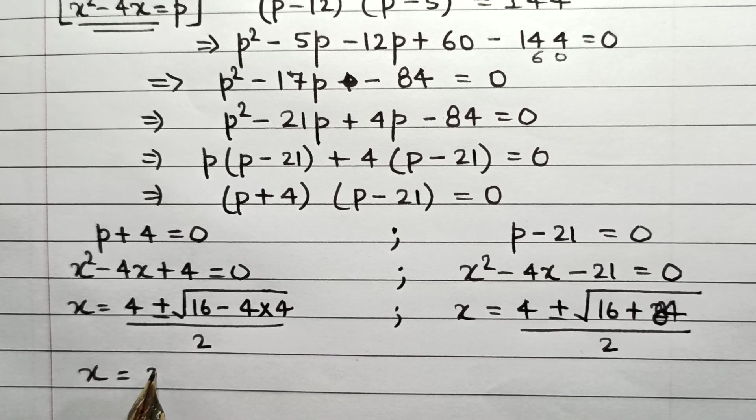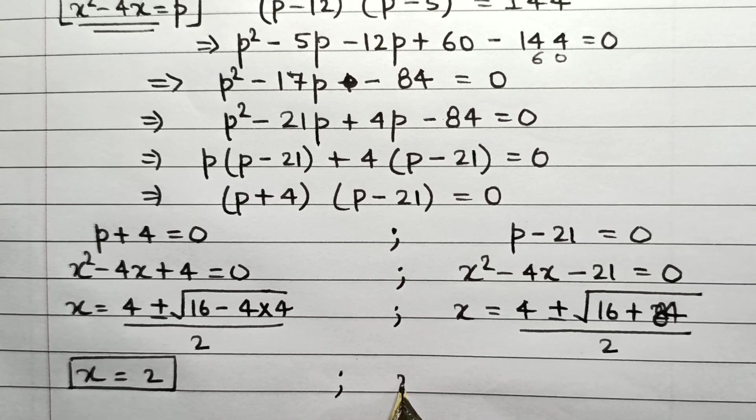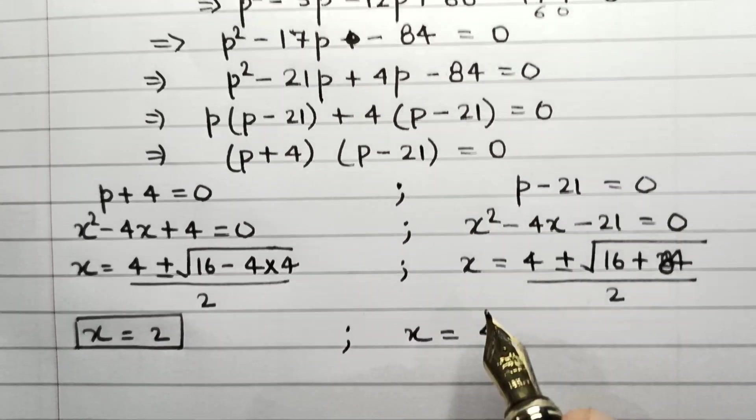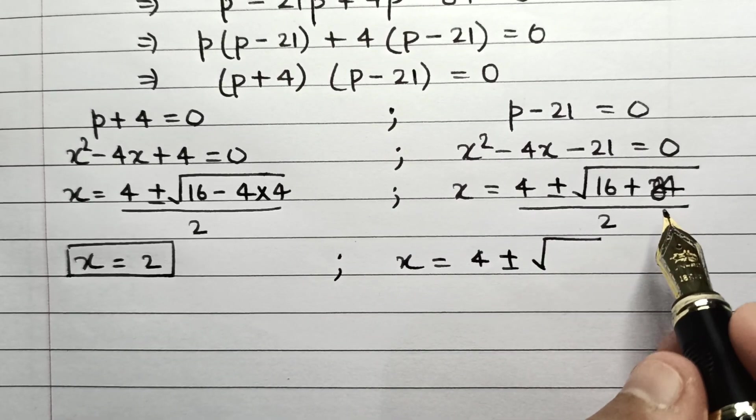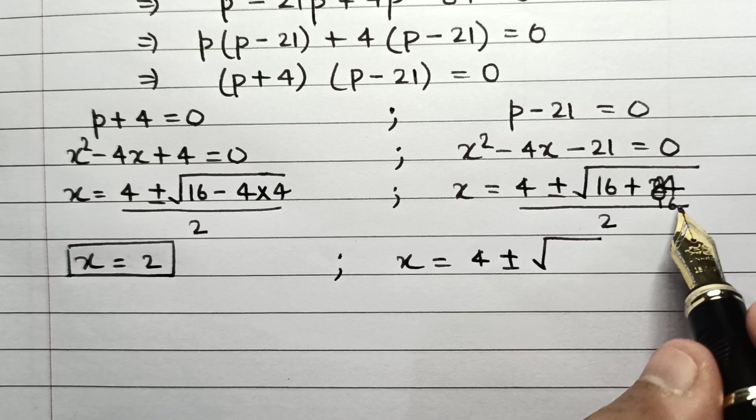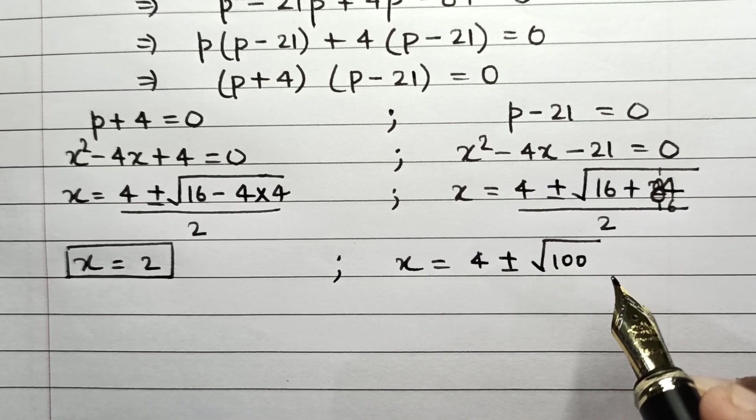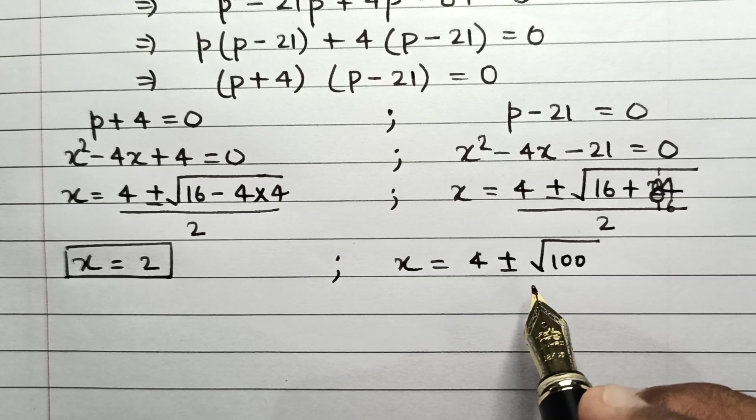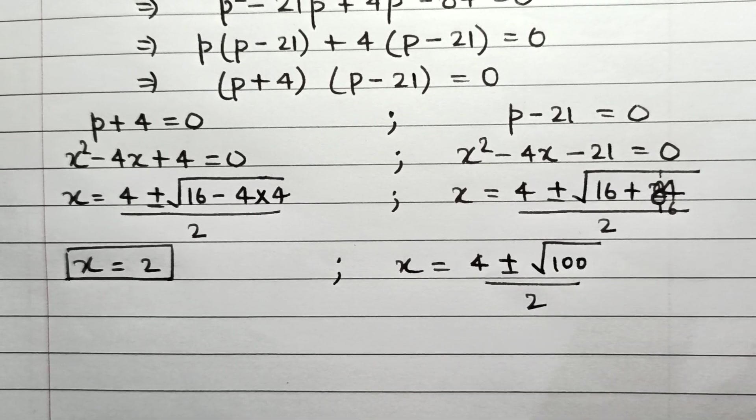So in this case, the value of x comes out to be 2, which is the first answer. And in this case, x = 4 ± √(64 + 84) divided by 2, which is 4 ± √100 divided by 2, and then we solve this to get the value of x.